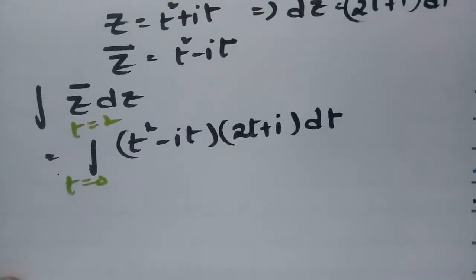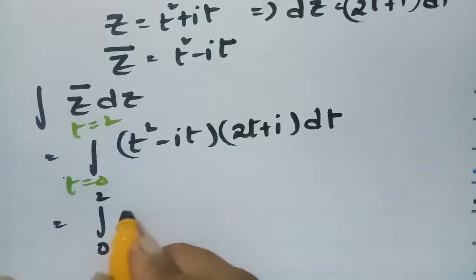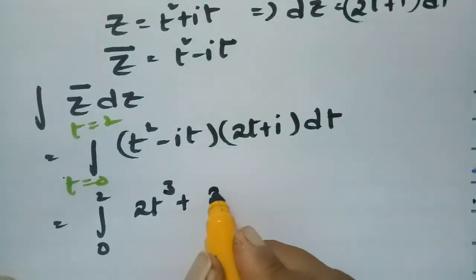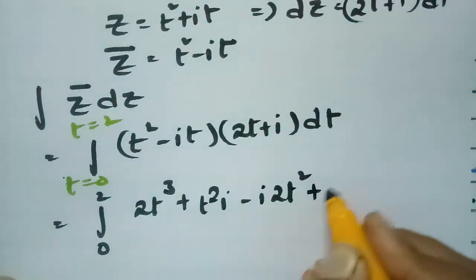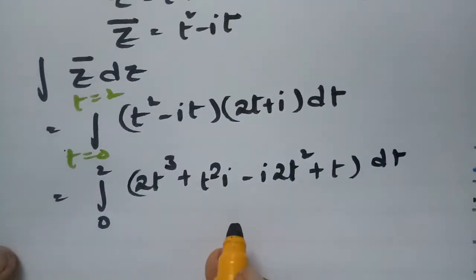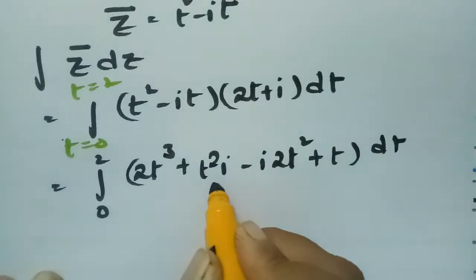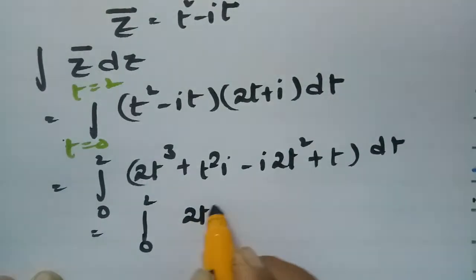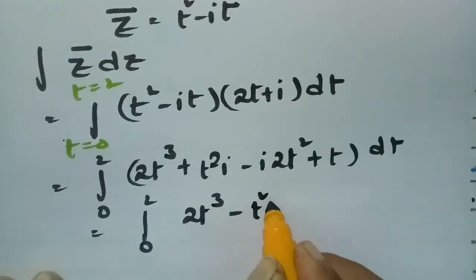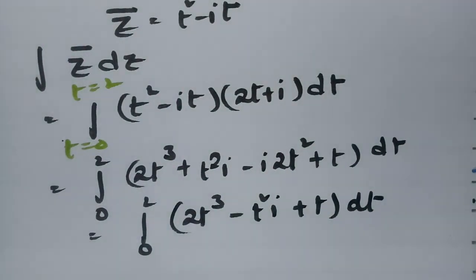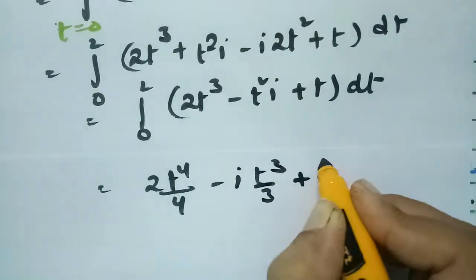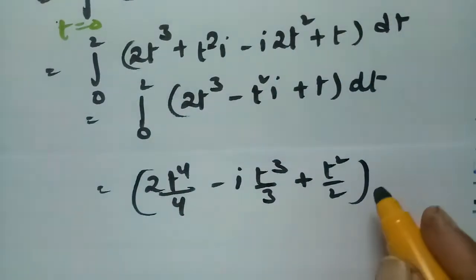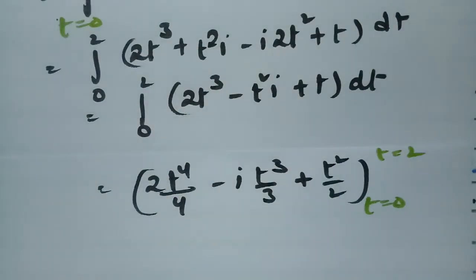Substituting, the integral from t=0 to t=2 becomes (t² - it)(2t + i) dt. Expanding: 2t³ + it² - 2it² - i²t = 2t³ + it² - 2it² + t. Combining real and imaginary parts gives ∫₀² (2t³ + t - it²) dt.